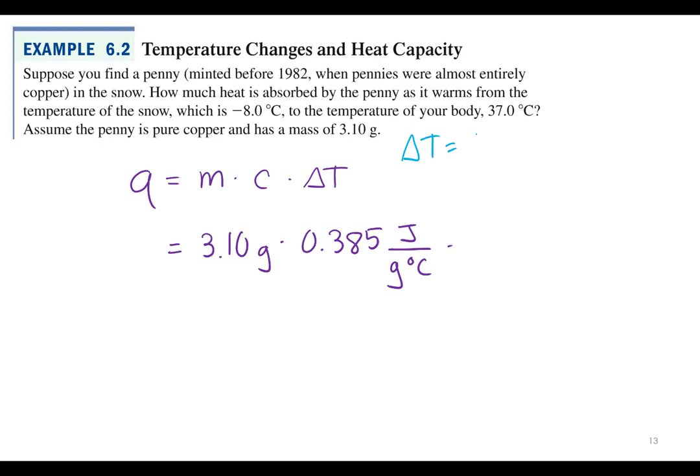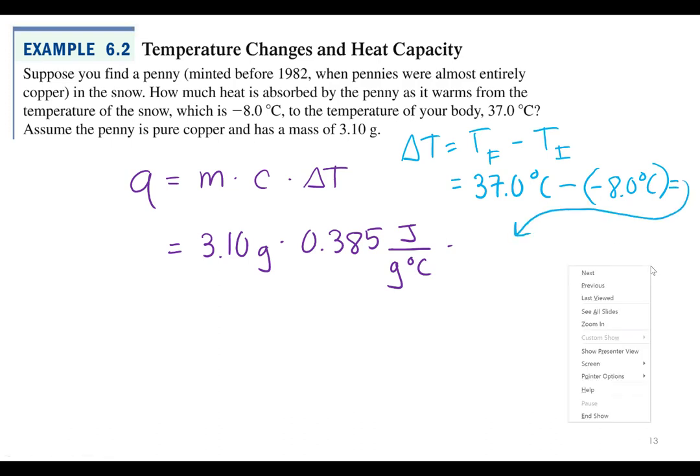So delta T, just like delta E, is final minus initial. So temperature of the final minus initial. What's my final temperature? 37.0, so it warmed up to the temperature of your body, so 37.0 degrees Celsius minus negative 8.0 degrees Celsius. What do we get? 45 degrees Celsius.